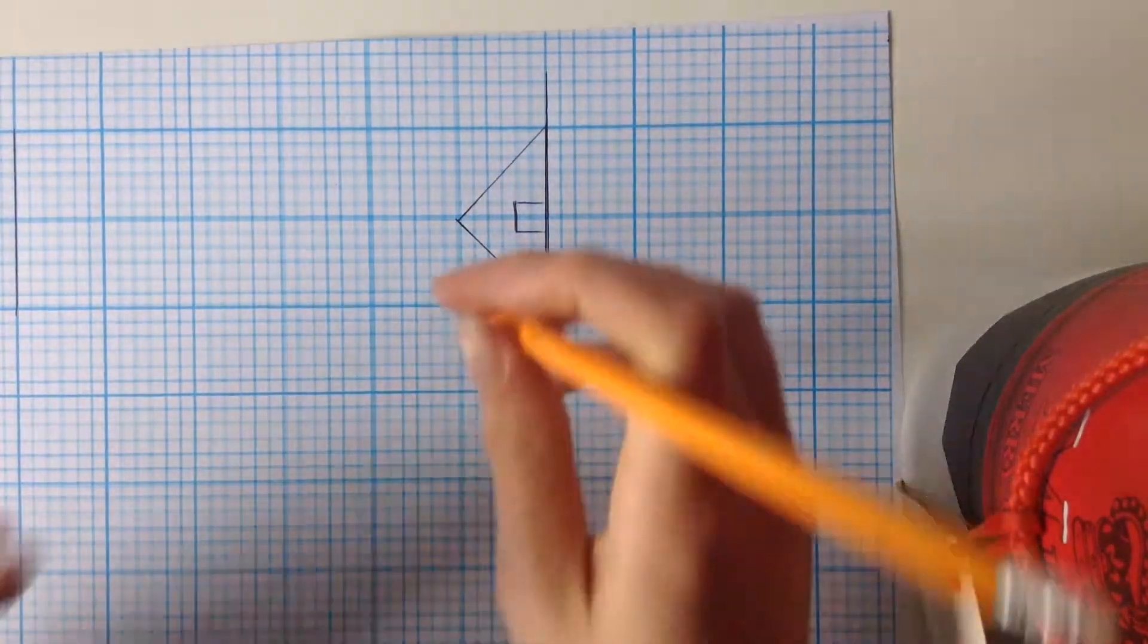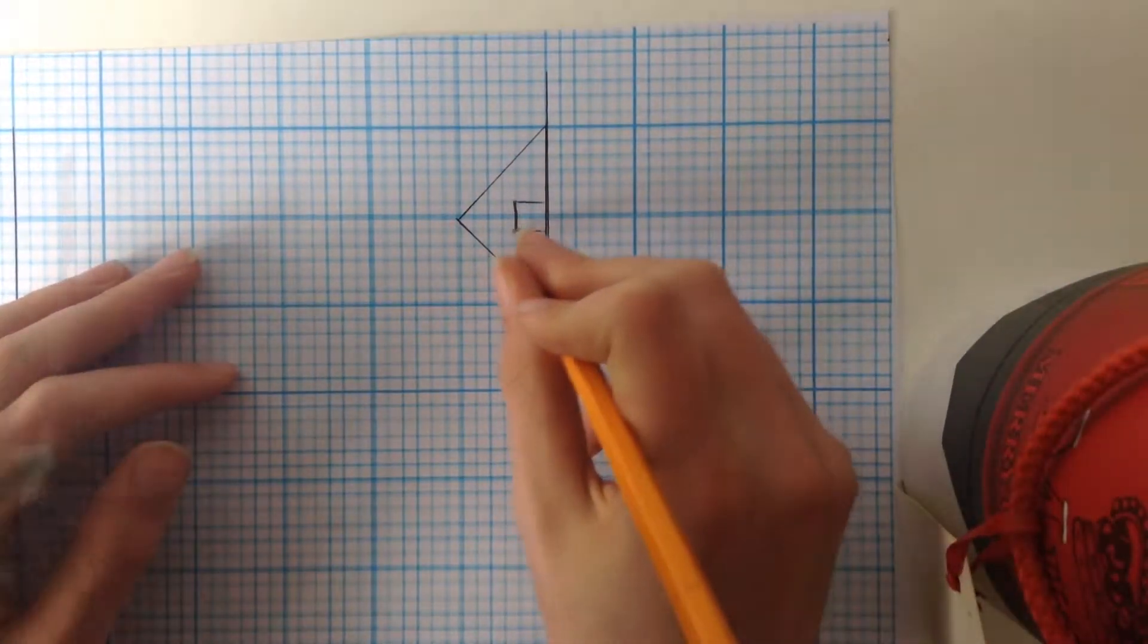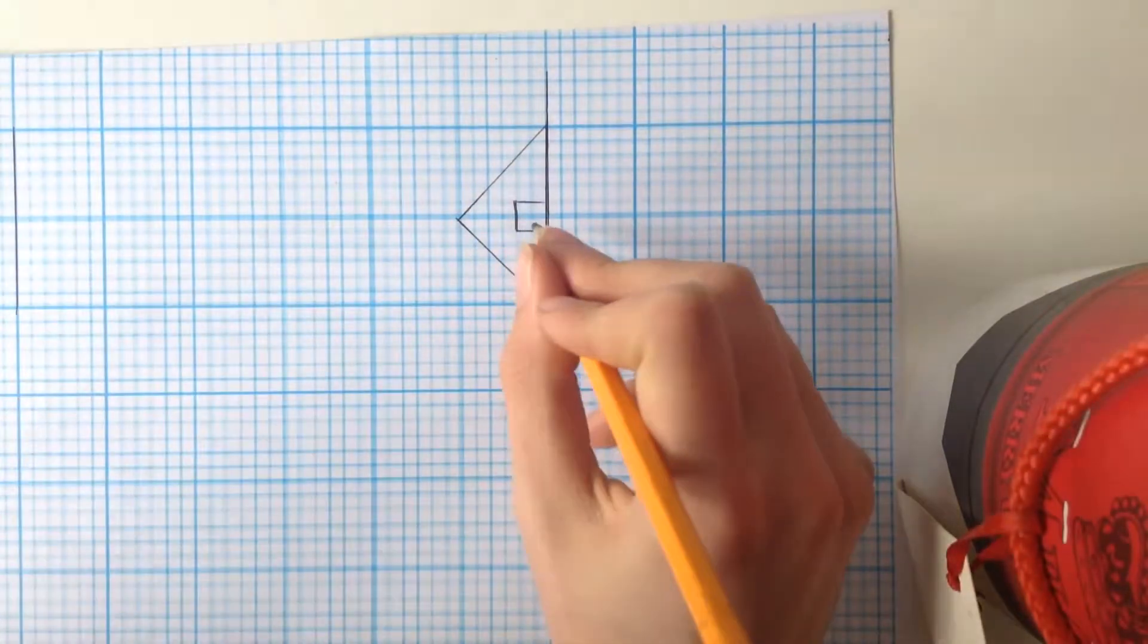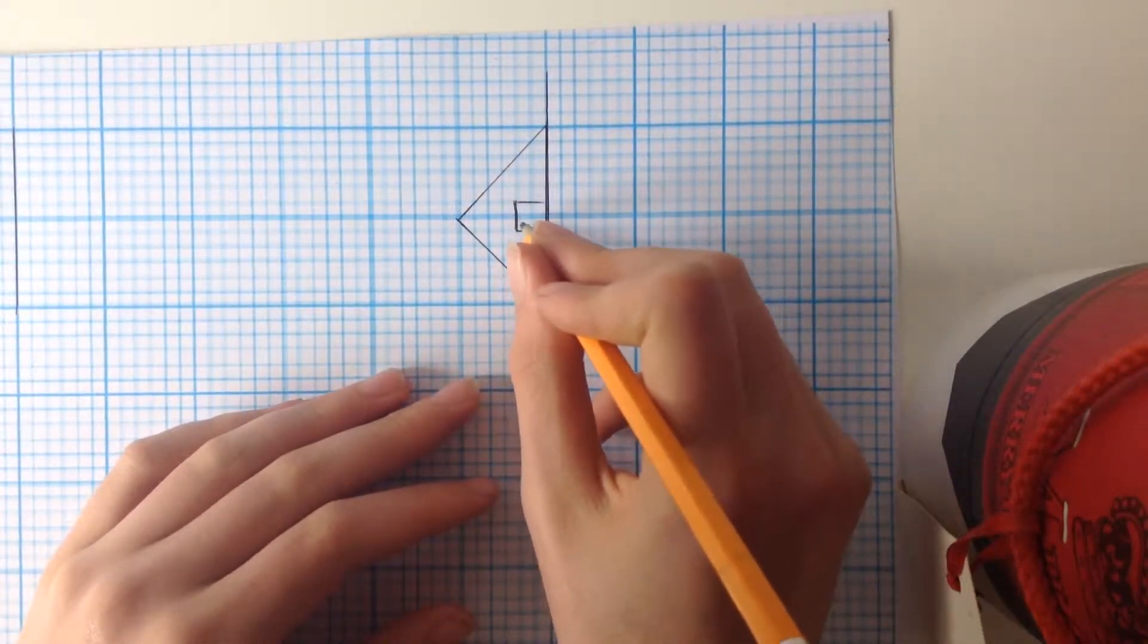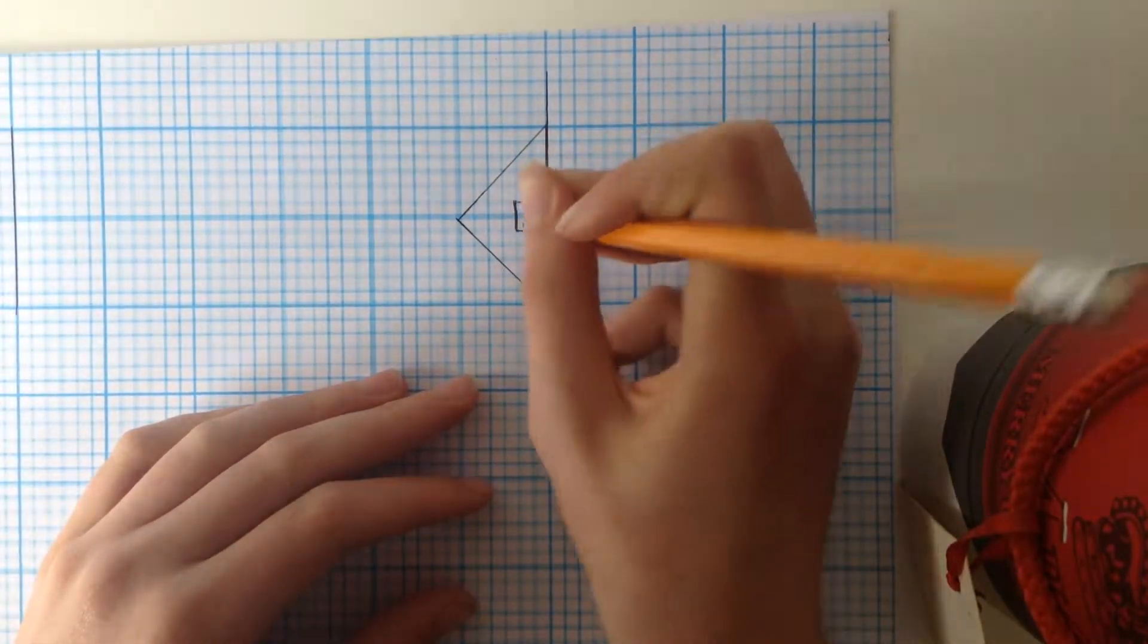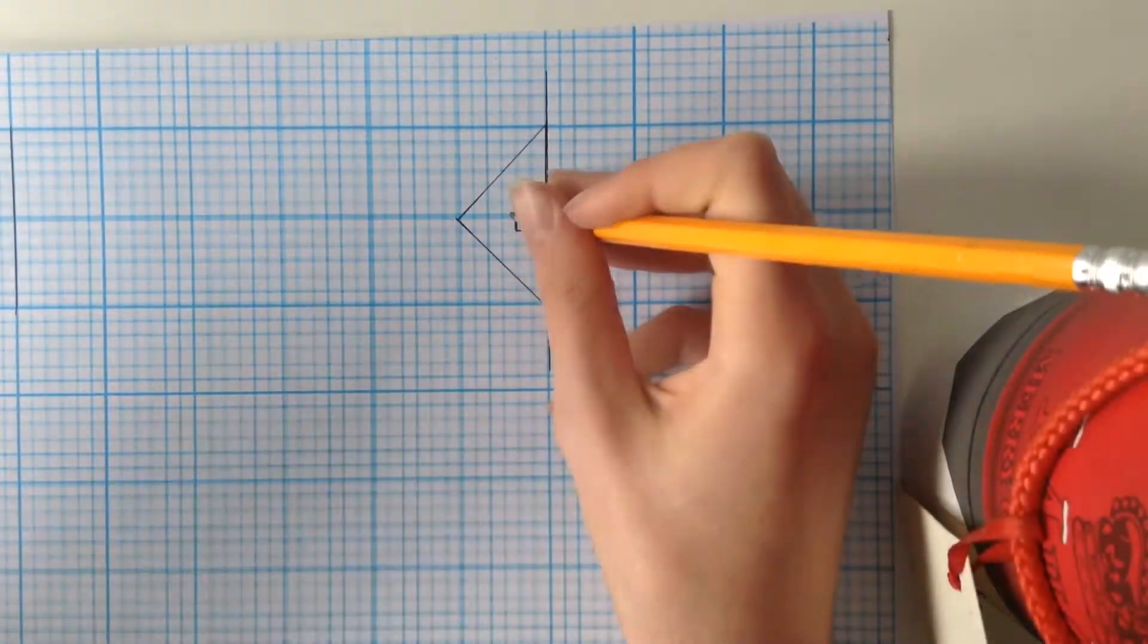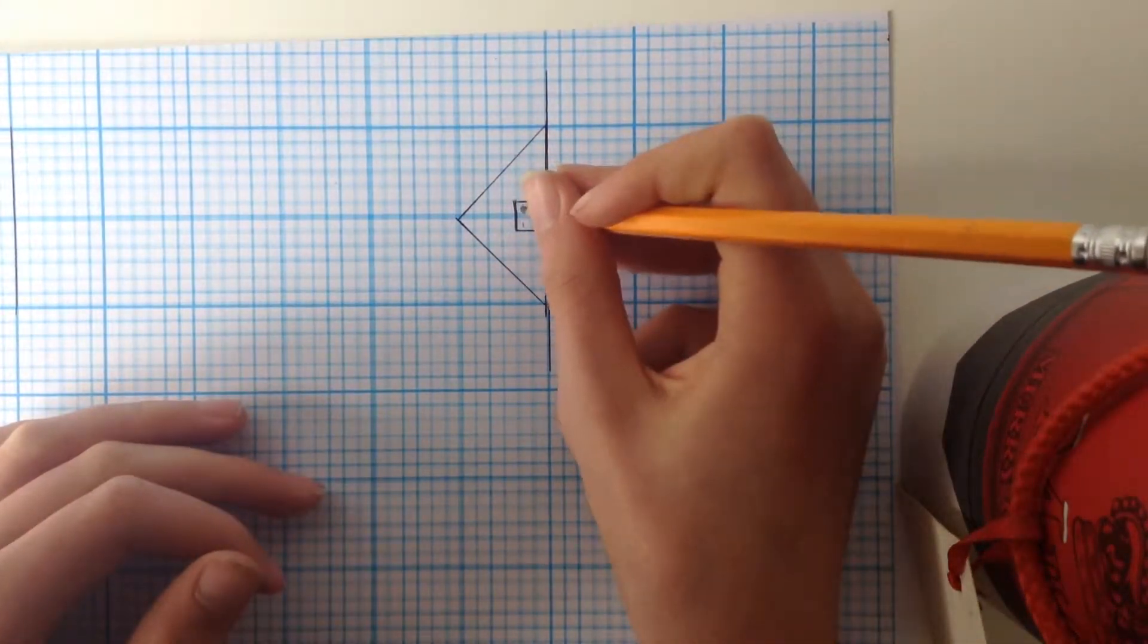So, let's start with this little square inside the triangle. You can see that this square is two squares long, two of these little squares long, so one, two, and two squares wide. So, that's one, two.